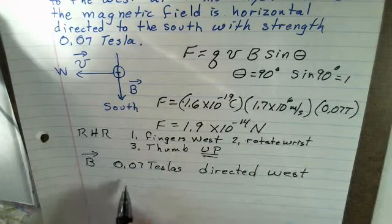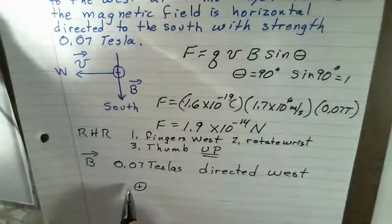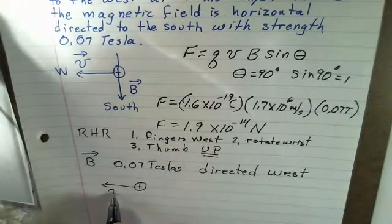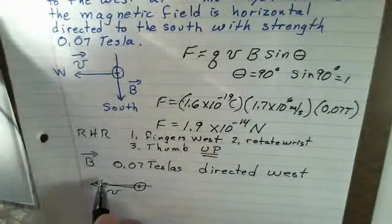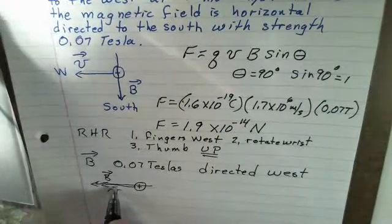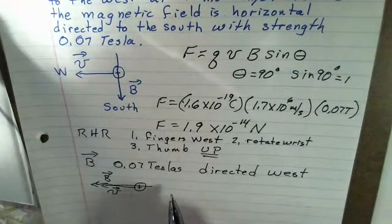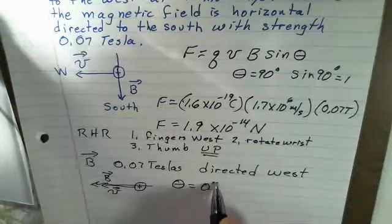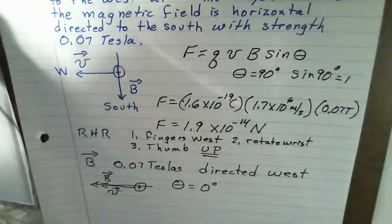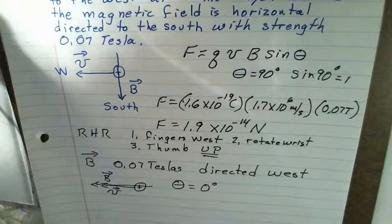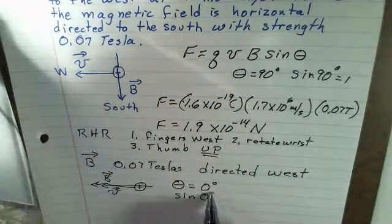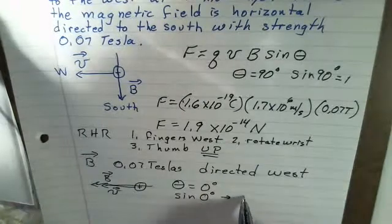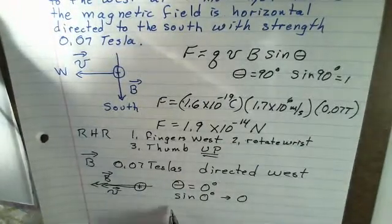As I inspect things here, if I make another drawing, here's our proton. The velocity vector is still to the west. The magnetic field vector is to the west, and the angle between these two vectors is 0. They're parallel to each other. They're both directed towards the west.